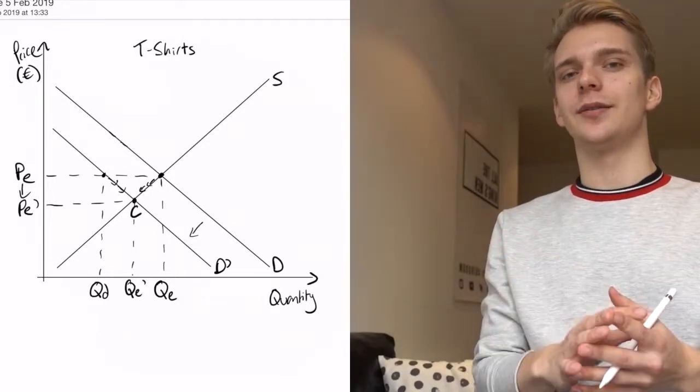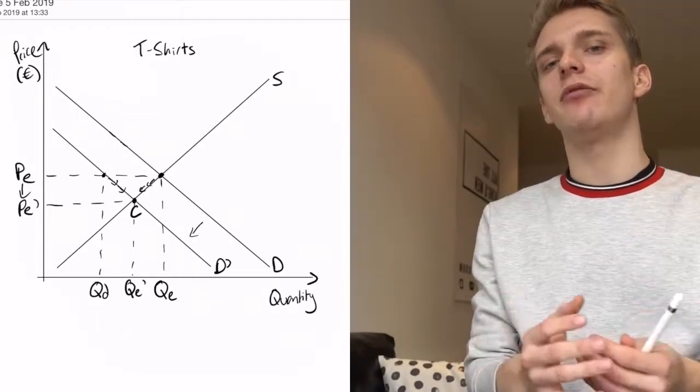So what have we learned? Equilibria are self-righting, meaning that whenever the price is not at the equilibrium price, there will be natural forces by producers to increase or decrease the price to get to the new equilibrium. On top of that, no matter how the demand curve or the supply curve shifts, we're going to end up in a new equilibrium where the supply curve meets the demand curve.